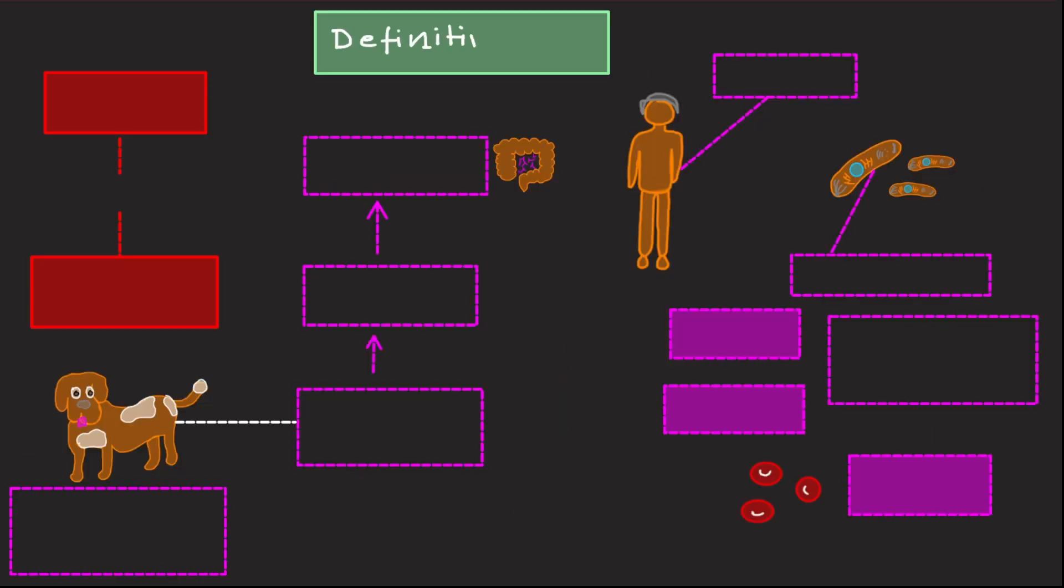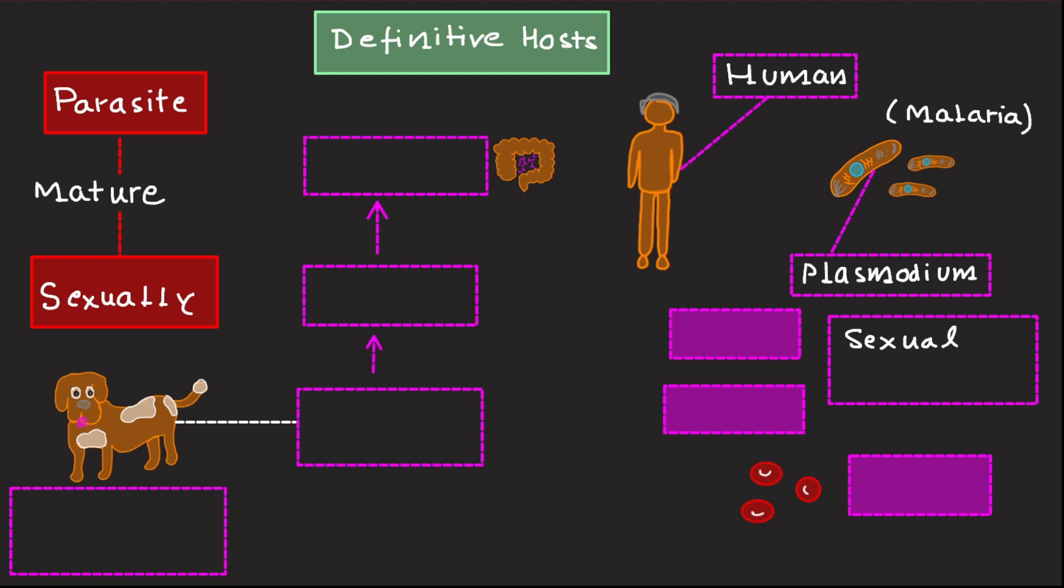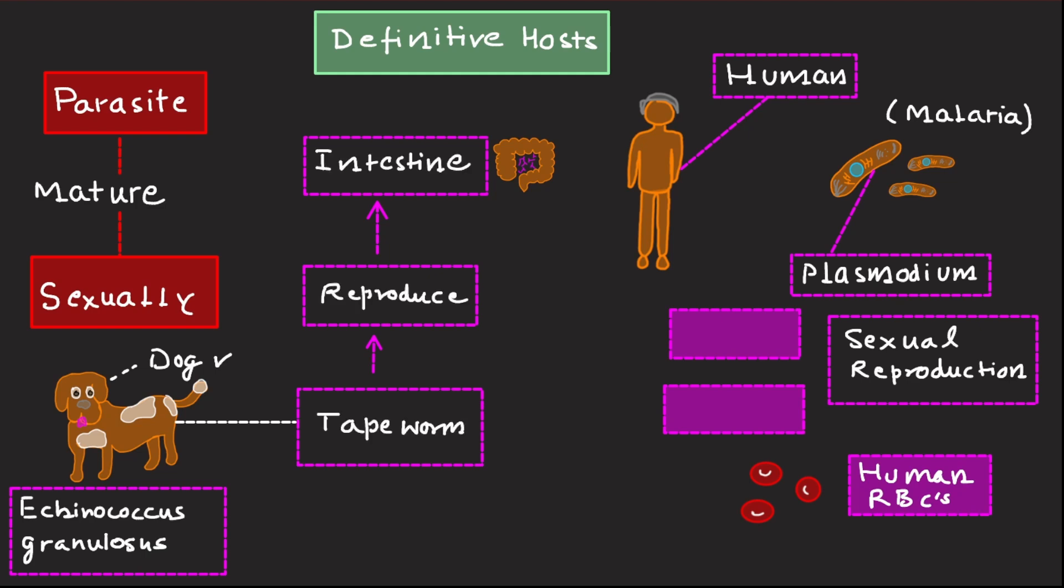Definitive hosts are those in which a parasite reaches maturity and if possible reproduces sexually. Humans serve as definitive hosts for plasmodium species, the causative agent of malaria. The parasite completes its sexual reproduction cycle in human RBCs. Second example is dogs for Echinococcus granulosus. In the case of tapeworm, Echinococcus granulosus, dogs are the definitive hosts where the adult worms live and reproduce in the intestine.